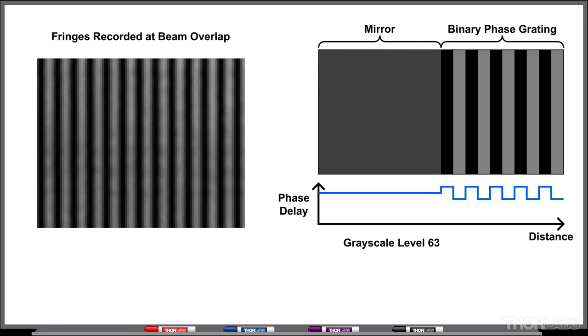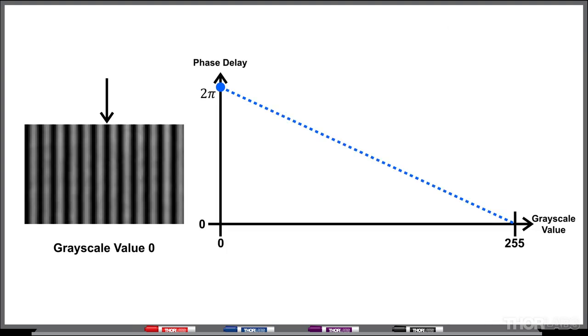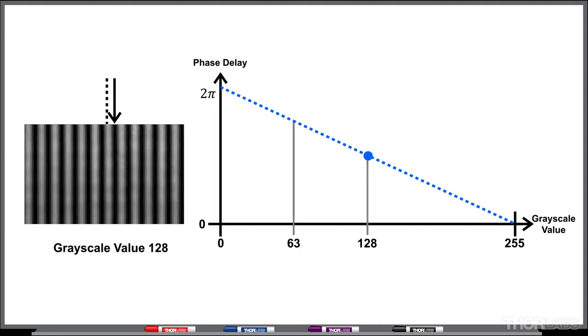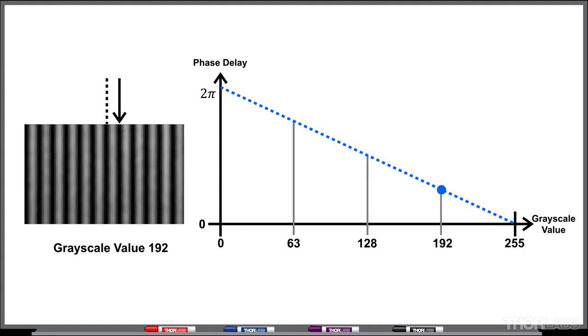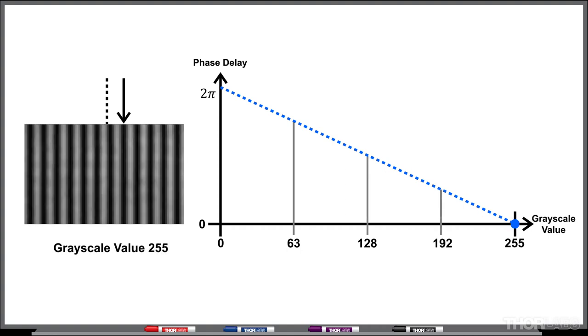While I monitor the position of the fringes, I increment the phase of the mirror side over the entire range of the SLM. By applying grayscale values from 0 to 255, I can determine the relative phase shift associated with each value.